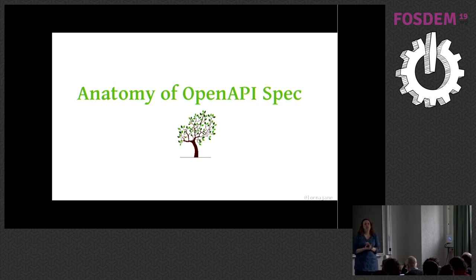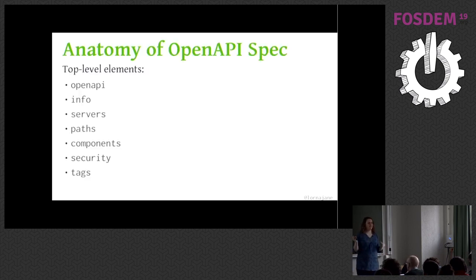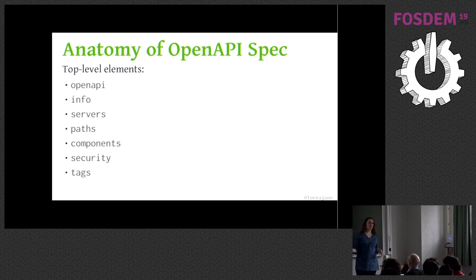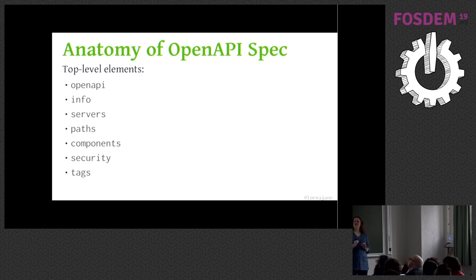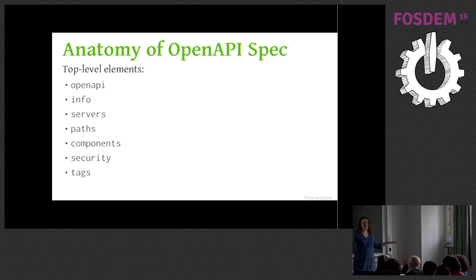Let's talk about the anatomy of an OpenAPI spec. It starts with a certain level of top-level elements and then each of those has many elements inside it — it kind of spreads out like a tree, except upside down. At the top level you will find: OpenAPI (that's the version of the spec), an info block — this is super interesting, a lot of documentation renderers don't show all of the fields in the info block, and it's very tempting to just write a description and skate over the rest. The future of OpenAPI is in discoverable APIs — we'll be uploading our specs to shared spaces and allowing people to discover the APIs that meet their needs. Don't skimp on what goes in the info section.